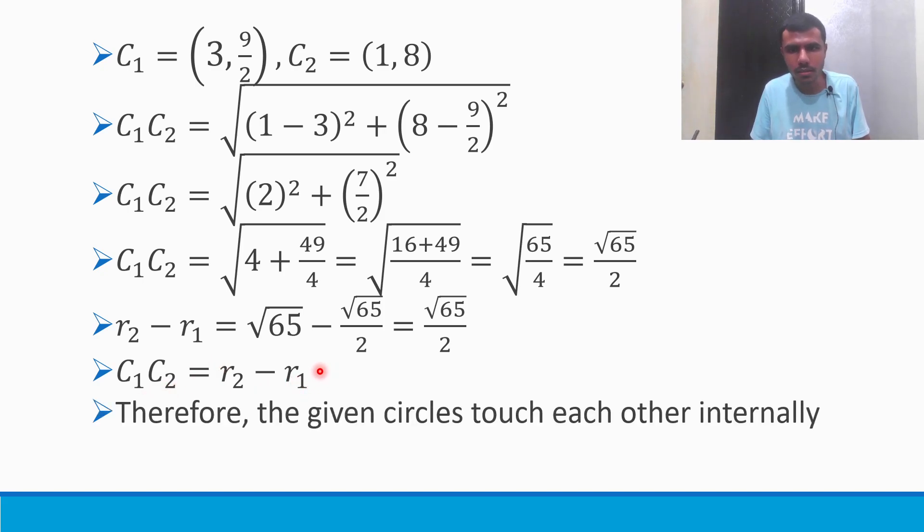Now you guys need to observe this. R2 minus R1 is root 65 minus root 65 by 2 which is 2 root 65 minus root 65 by 2, which is root 65 by 2. If you will see guys this R2 minus R1 is equal to C1 C2. This is possible only when the circles touch each other internally. Therefore, the given circles touch each other internally.